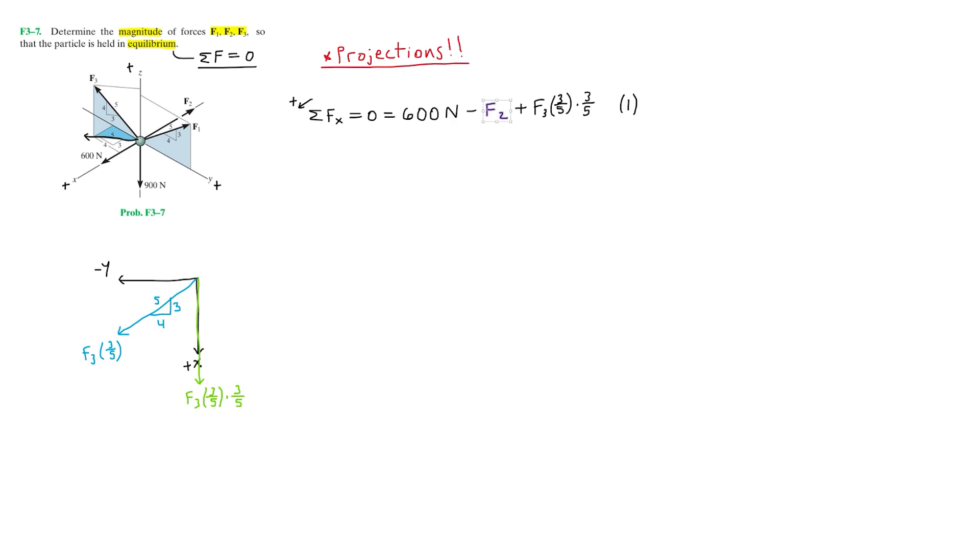I'll just go ahead and quickly color code these two forces. And remember, this whole expression is just one force. So now we can move on to the summation of forces in the Y direction equal to zero. Looking at the diagram again here, we have F3, which shares a component in the negative Y direction as we previously saw. So we'll have F3 projected on the Y, which I'll call F3Y.